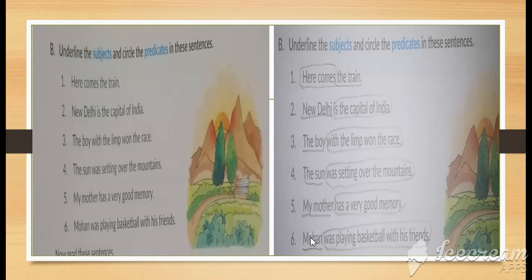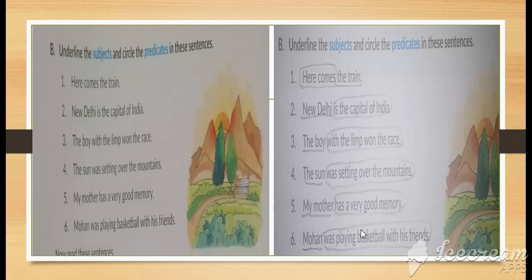As you can see, Mohan is the name and belongs to the subject, and 'was playing basketball with his friend' — with the helping verb — is included in the predicate part, telling us about the subject. So here we have completed the subject and predicate exercise given in your book. In the next video we will cover the other parts.